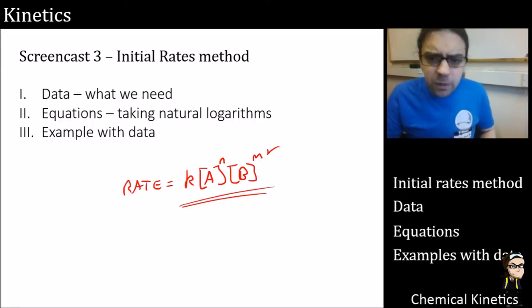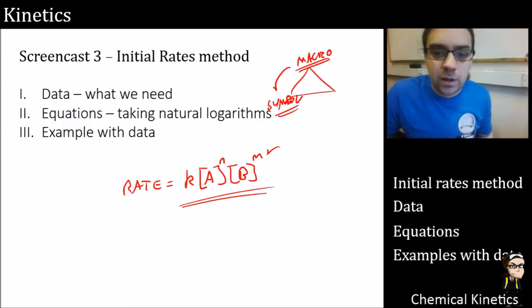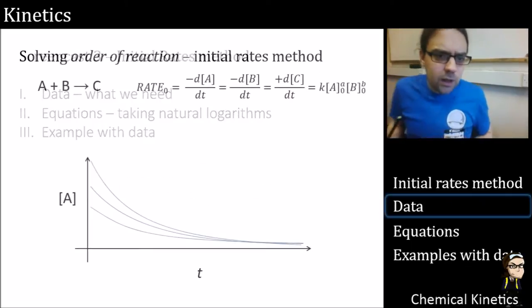Think about that whole Johnstone's triangle thing. This is really a relationship between macroscopic world and the symbolic world. We're looking at the abstract maths and what data we can get from the lab, and this is kind of connecting the two.